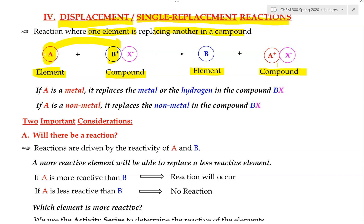Let's go over this reaction in a little more detail in terms of what replaces what. If A happens to be a metal, it will replace the metal or the hydrogen in compound BX. If A is a non-metal, it will replace a non-metal in compound BX. That way we know what is replacing what and can write the corresponding products.